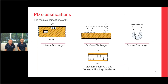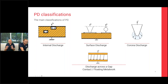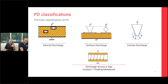Recapping the main PD classifications — they behave very differently, are measured differently, and produce different PRPD patterns. For internal discharge, there are two cavities shown: one in the center of the insulation and one close to a conductor. A discharge in the center produces a PRPD pattern occurring on both halves of the sine wave cycle quite consistently. If the void is towards the high-voltage or earth conductor, the PRPD pattern will be dominant on one half of the cycle only.